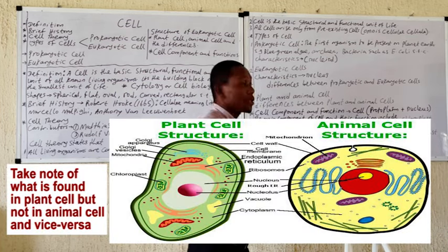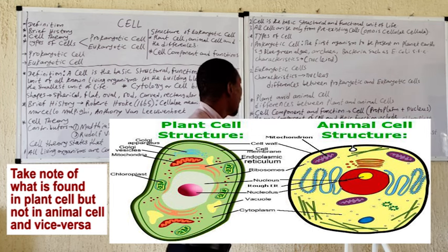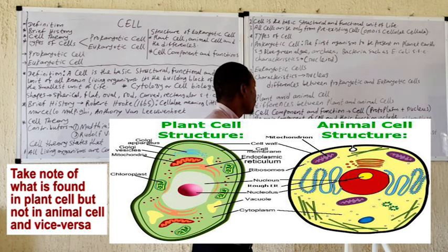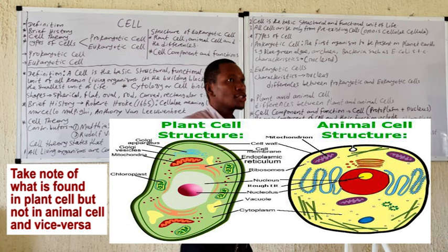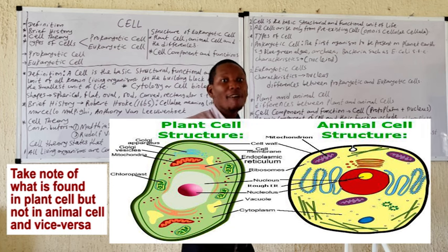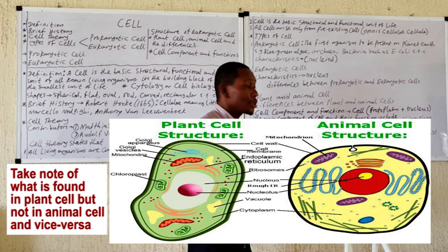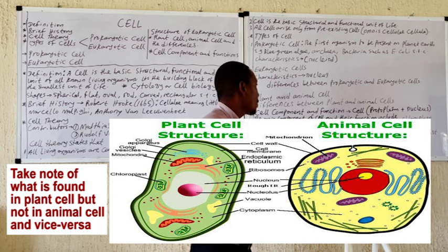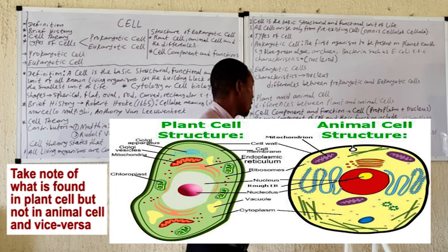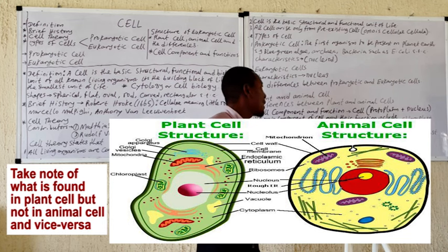We'll now take a look at the plant and animal cells. You can see the diagram of the plant cell on your screen. The animal cell is usually oval in shape, while the plant cell has a different structure as shown on screen. We'll quickly highlight the differences between plant cell and animal cell before discussing the various components.